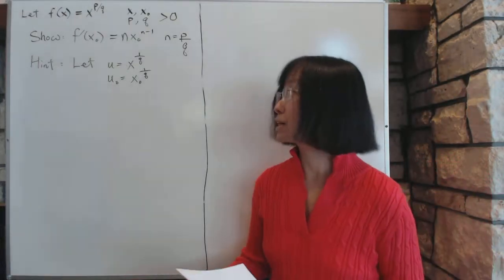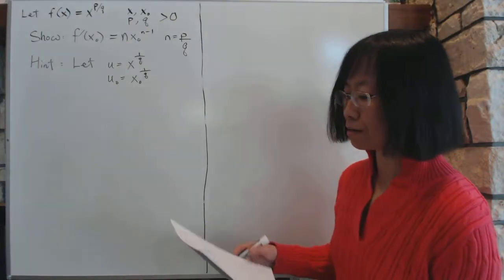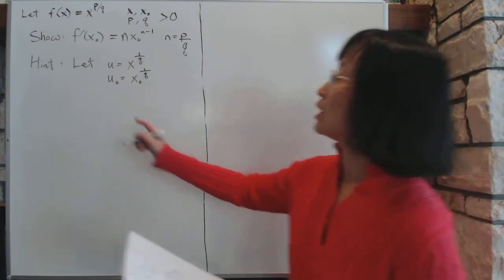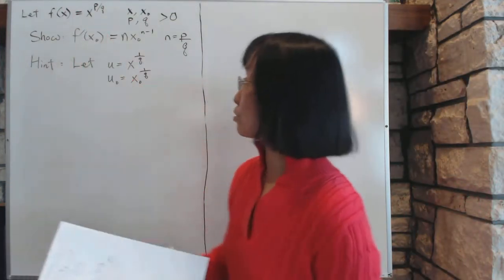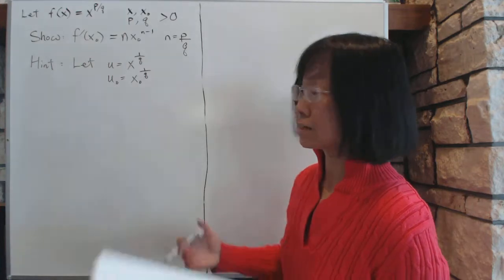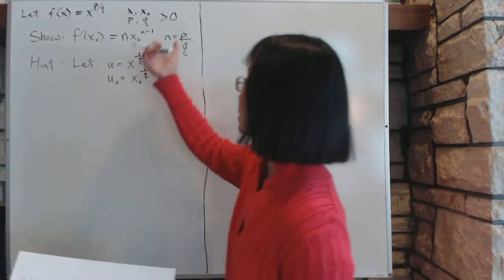Section 1.1 derivatives. Now let's look at an example of a problem that we will do in this section. Let f of x equal x to the power of p over q, where p, q, x, and x0 are all positive. Keep it simple here.